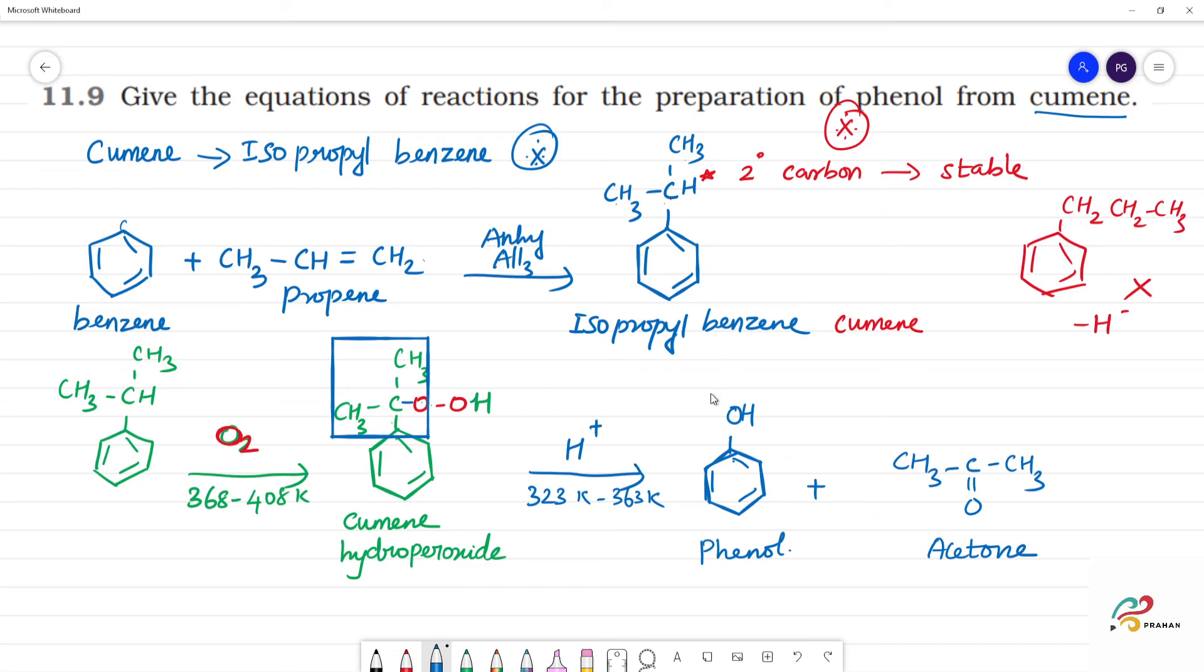This product is important for competitive exams. Anhydrous aluminum chloride AlCl3 is used, and this reaction is Friedel-Crafts alkylation.